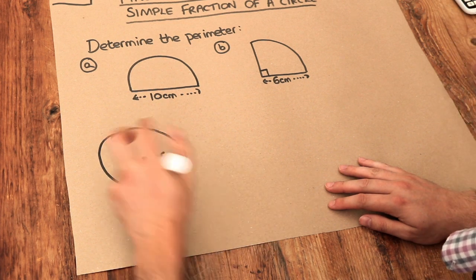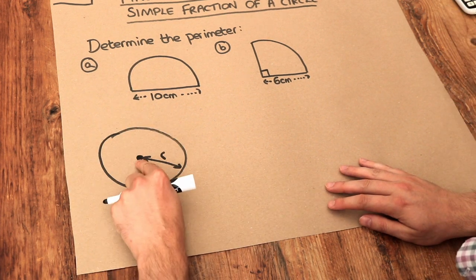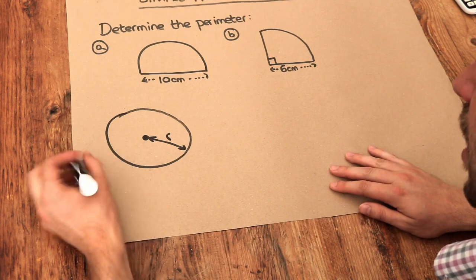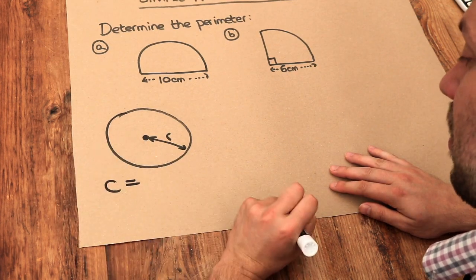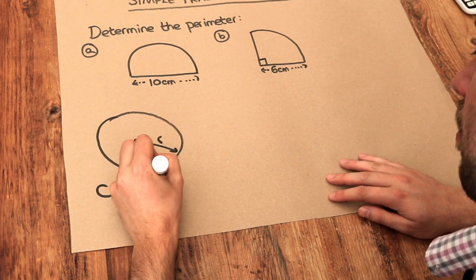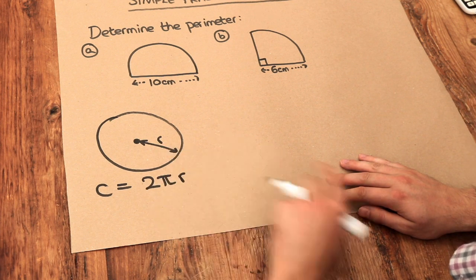If that was the radius of the circle, which remember is the distance between the centre of the circle and the circumference, then the circumference of a circle, the perimeter of the circle, we could either write as 2 multiplied by pi multiplied by r, where r is the radius.